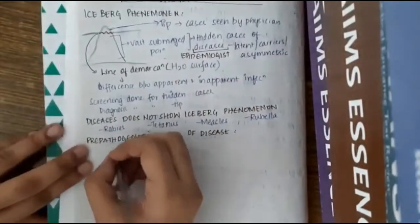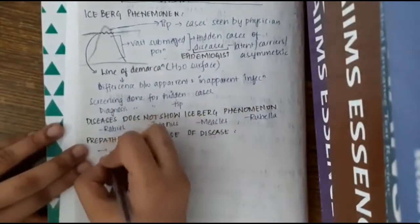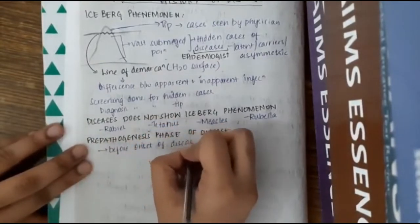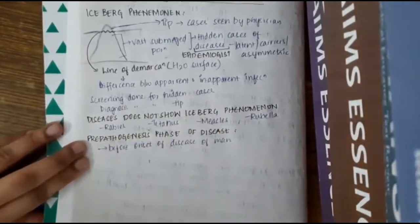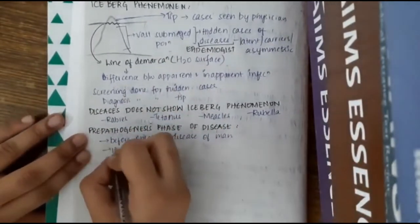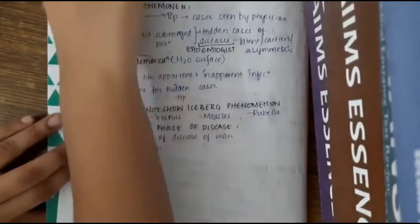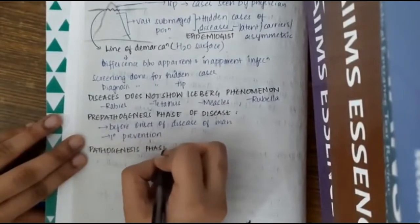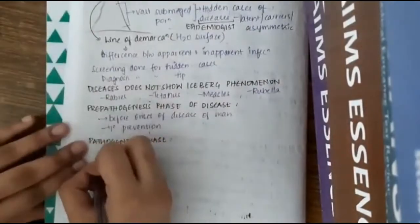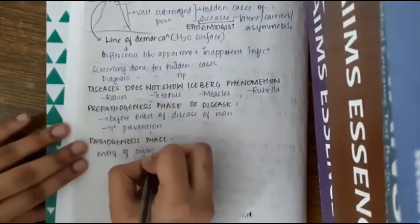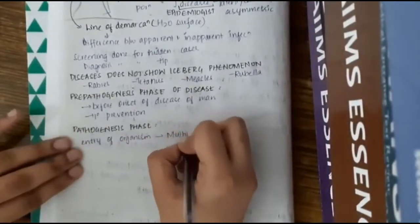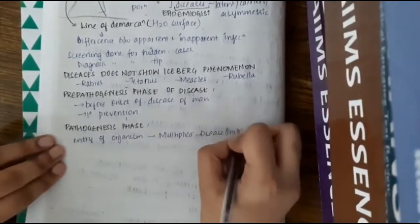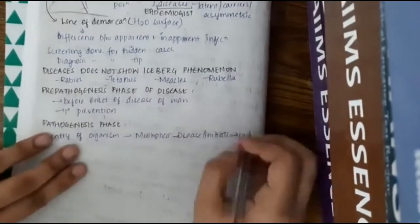There are two phases of natural history of disease. First is the pre-pathogenic phase, which is before the onset of disease in man — the step we take here is primary prevention. Second is the pathogenic phase, which includes entry of the organism, then multiplication of the disease, then occurrence of disease.